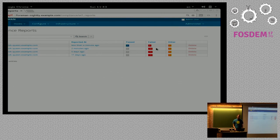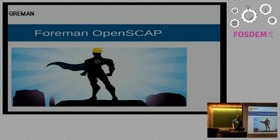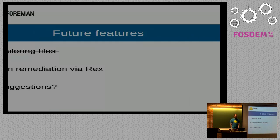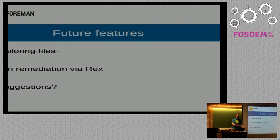This is basically how you can check compliance with OpenSCAP. Future features: one recently completed feature is tailoring files, which allows you to modify your profiles and policies — it will be in the next release of Foreman OpenSCAP. We also have planned running remediation using remote execution, where we would parse the remediation scripts from failing reports and have a single button to push to get everything fixed. We are always happy to hear your suggestions.